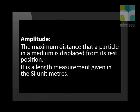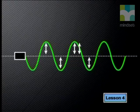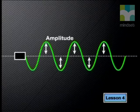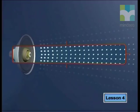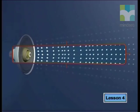Amplitude is defined as the maximum distance that a particle in a medium is displaced from its rest position. It is a length measurement given in the SI unit meters. Once again it is much easier to measure the amplitude of a transverse wave — you simply take the distance from rest to crest. With longitudinal waves it is nearly impossible to look at the medium and find the amplitude.